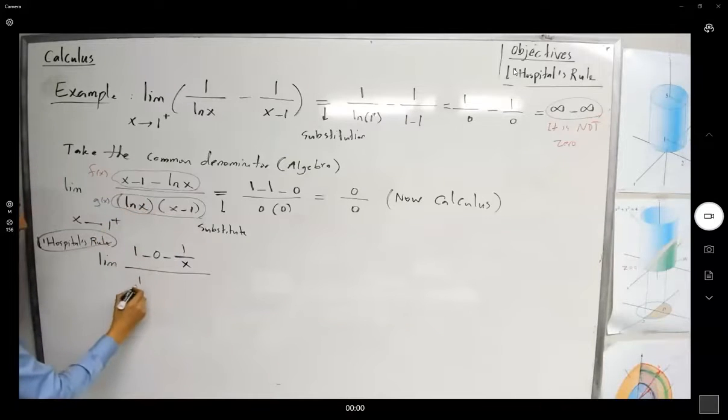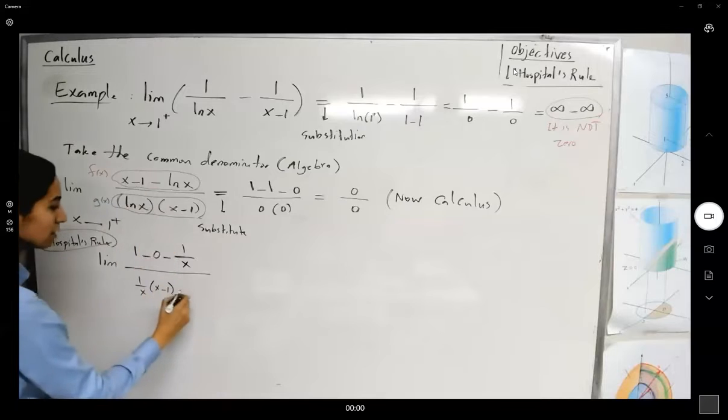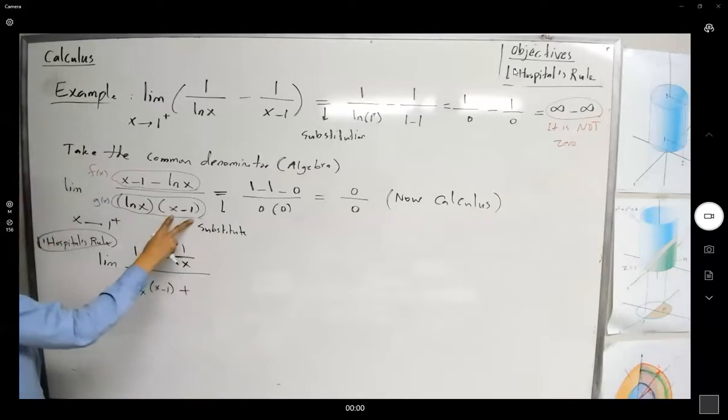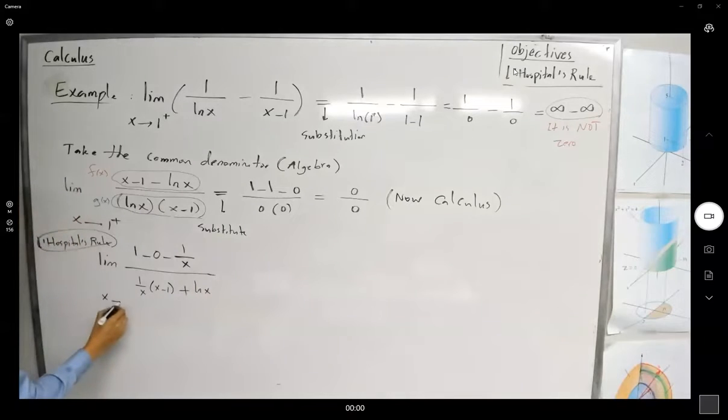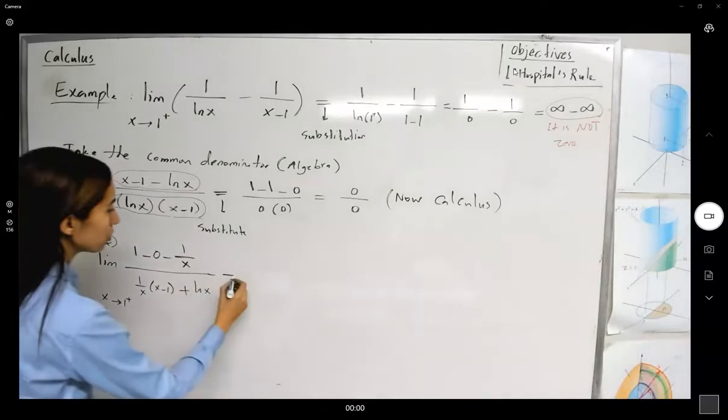Here you have the product of two functions. You have to apply product rule. The derivative of ln is 1 over x times x minus 1 plus the derivative of x minus 1, which is 1 times ln of x. x goes to 1 from right-hand side. We're done with calculus part. Now do the substitution.